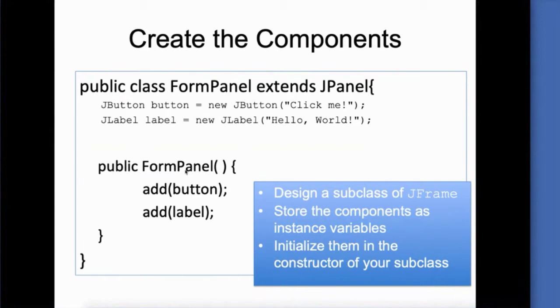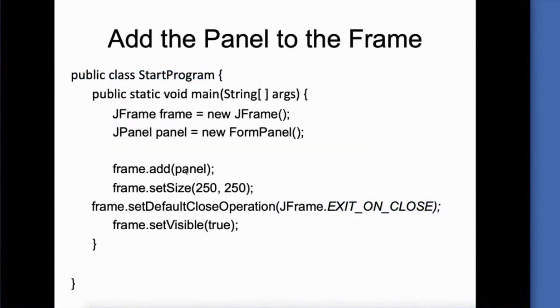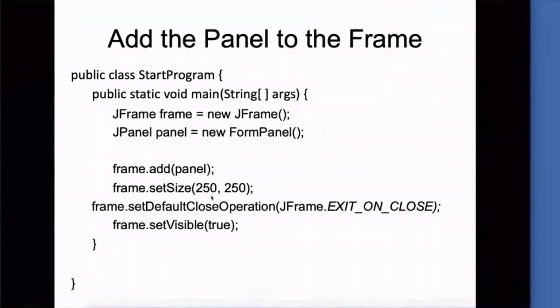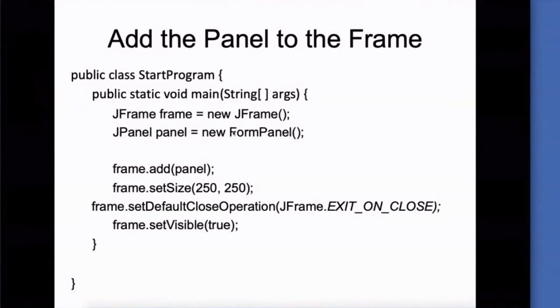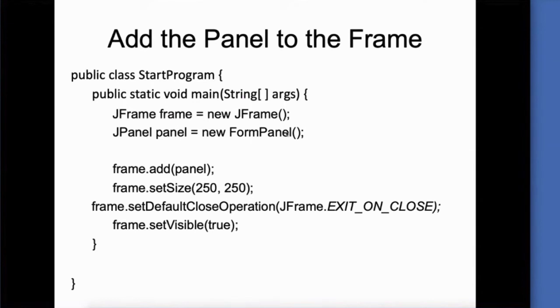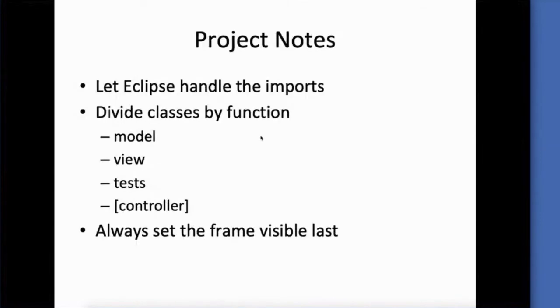Once you have the formPanel created and all the components on the panel, then you're ready to add that panel to the frame. So this is inside of our main method, inside of a class called StartProgram. I create a new instance of a JPanel based on my formPanel. My formPanel extended the JPanel class, so it is inheriting from that superclass. So I'm creating a new JPanel, call it panel, and then I'm adding that panel to the frame. Set the size, make sure I exit on close, and then finally set it to be visible.